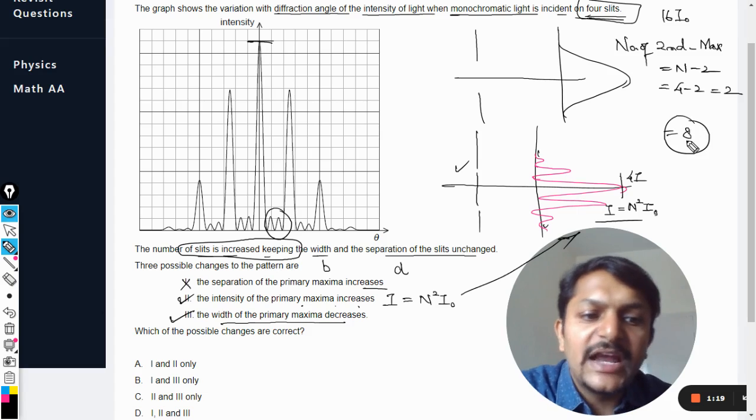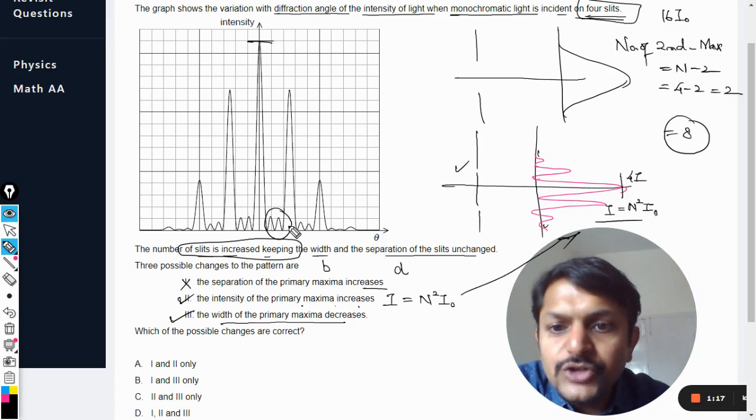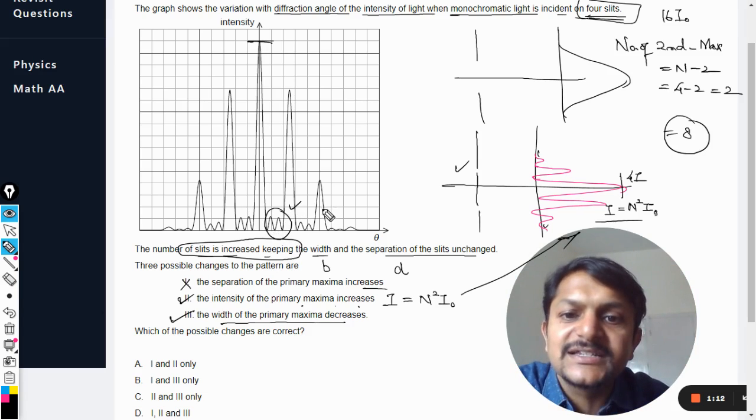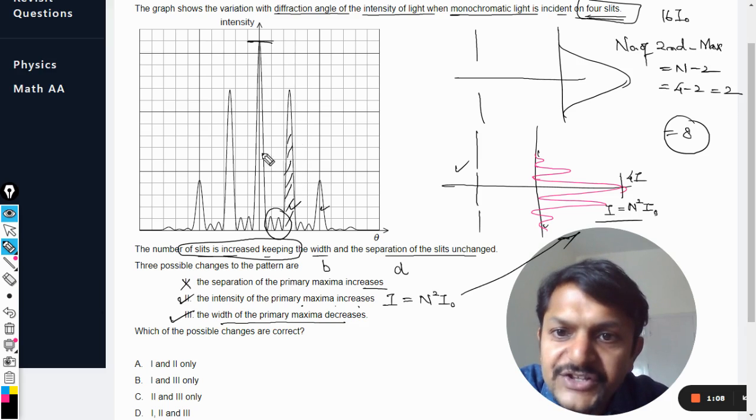So secondary maximas will become bigger, so it means more space is required here. And from where is the more space coming? By making this slit and these slits to be thinner.